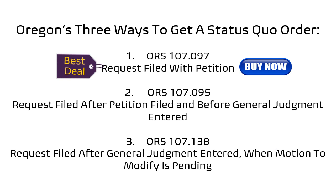The last way to get a status quo order is under 107-138. That applies if you already have a general judgment — so you have an older case with a parenting plan in place — and you're filing to modify that parenting plan. You can get a status quo order just to keep things stable during the modification and make sure nobody does anything problematic.